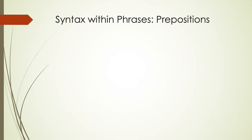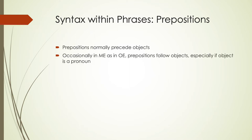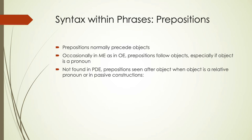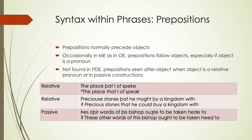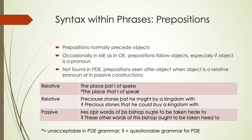Prepositions increase during Middle English and normally precede their objects, though occasionally they'll follow objects if the object is a pronoun. Something we don't see in present-day English but did in Middle English is prepositions after an object if it's a relative pronoun or in passive constructions. For example, 'the place that I speak' would be a normal Middle English construction, but can't really be said in present-day English. 'Precious stones that he could buy a kingdom with' — some may find that acceptable today, and others may not.